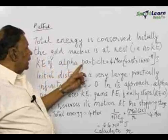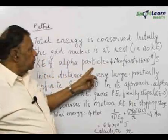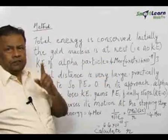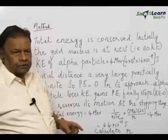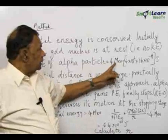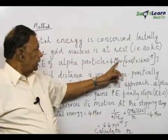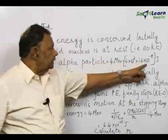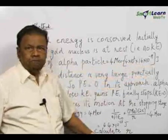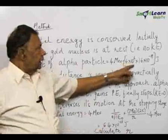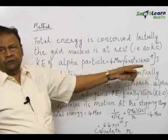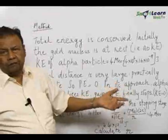The kinetic energy of the alpha particle is given in the problem as 4 MeV. MeV means million electron volts - 4 million electron volts is converted here into joules. The energy is now expressed in joules and this is the initial energy. It is also the total energy because the gold atom has no energy.